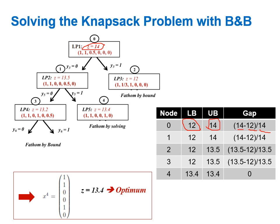The optimum solution is the last incumbent solution found during branch and bound, obtained at node four. This is how we solve a knapsack problem using the greedy procedure within branch and bound. This is the end of this video lecture and also the end of the branch and bound algorithm topic. In the next lecture we will continue with cutting plane algorithms.